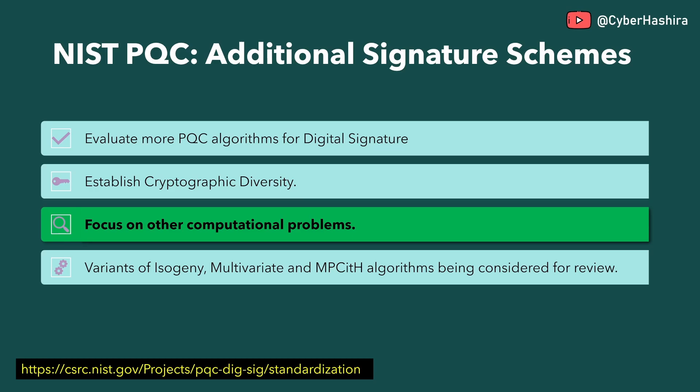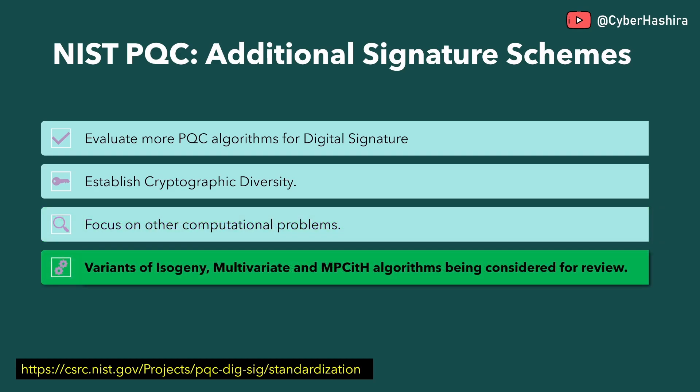NIST is trying to accomplish this goal by focusing on other computationally challenging problems. Some of the types of algorithms being reviewed under the additional digital signature scheme include isogeny-based, multivariate-based, and MPC-in-the-head-based algorithms.